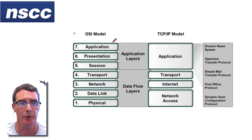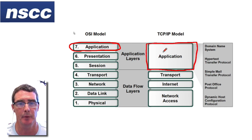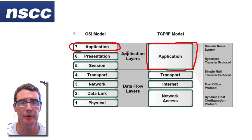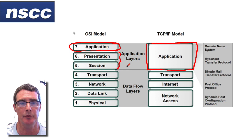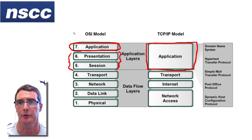In both the OSI model and the TCP model, the application layer is the top layer. However, in the TCP model it performs more functions — in particular, it also performs functions that are done by the presentation and session layers of the OSI model. We'll look at what those functions are.